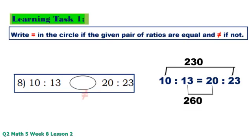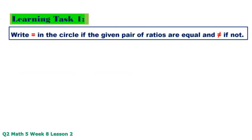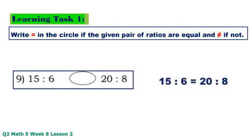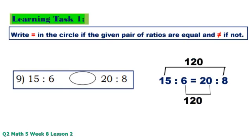Number 7: Not equal. Number 9: 15 times 8 equals 120, 6 times 20 equals 120. Equal.